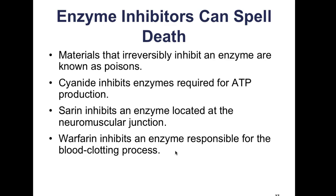Enzyme inhibitors can also spell death. Materials that irreversibly inhibit enzymes are known as poisons. Three examples are: cyanide, which inhibits enzymes required for ATP production; sarin, which inhibits an enzyme at the neuromuscular junction — where nerve endings attach to skeletal muscle cells to allow muscle contraction; and warfarin, which inhibits an enzyme responsible for the blood clotting process, preventing fibroblasts from laying down material to heal wounds.